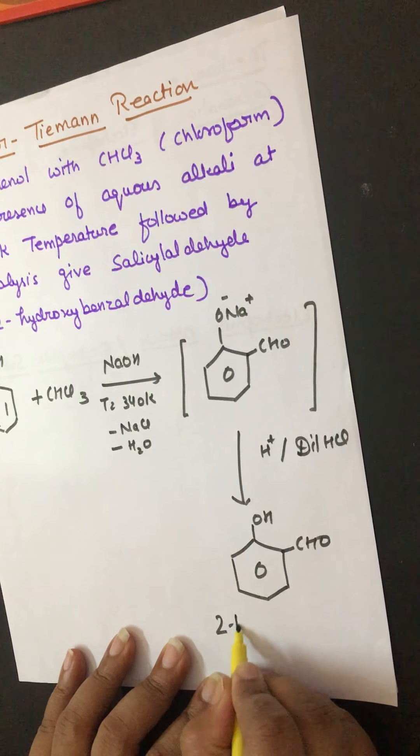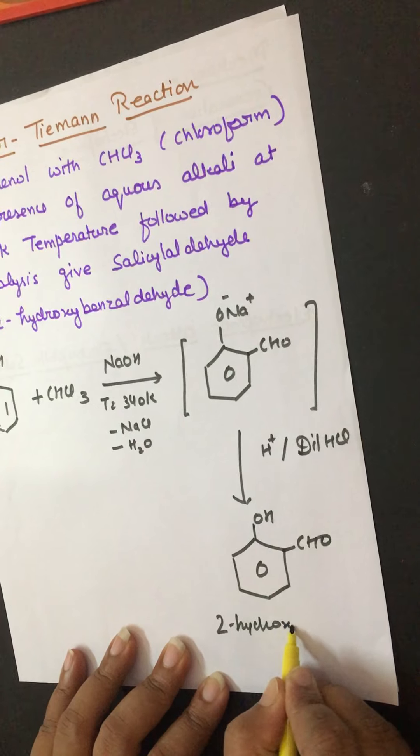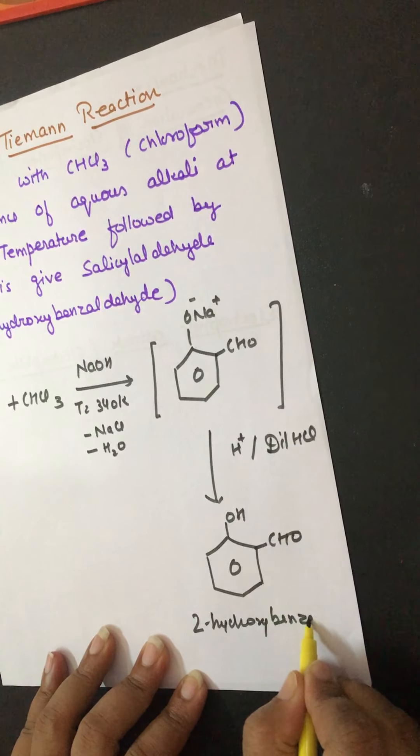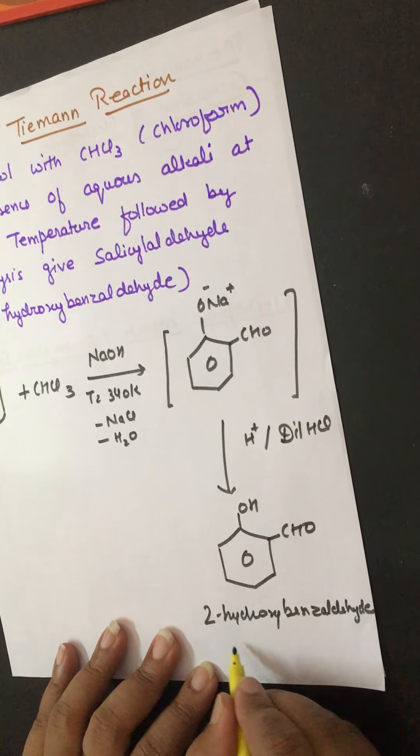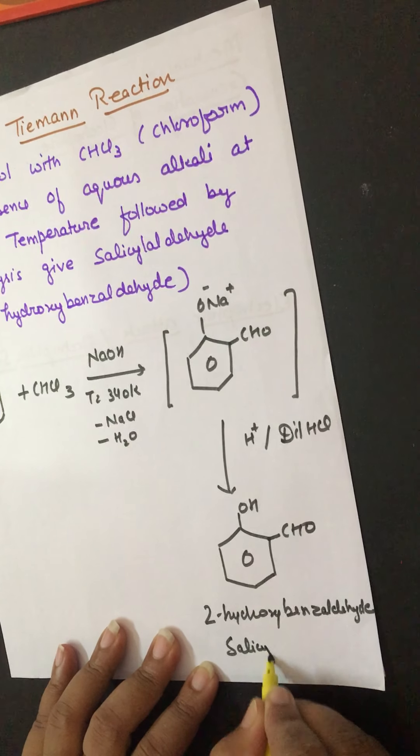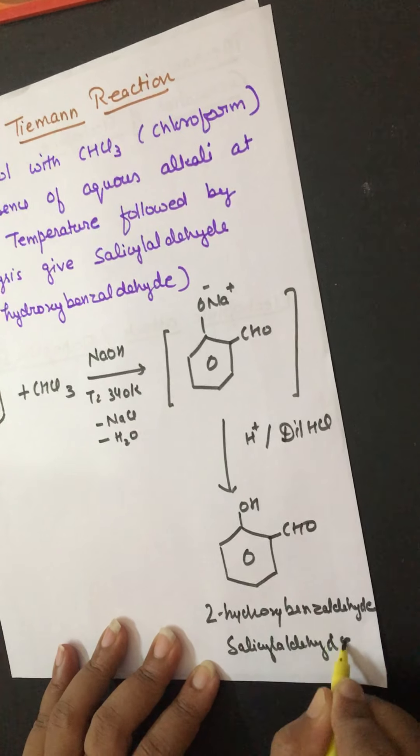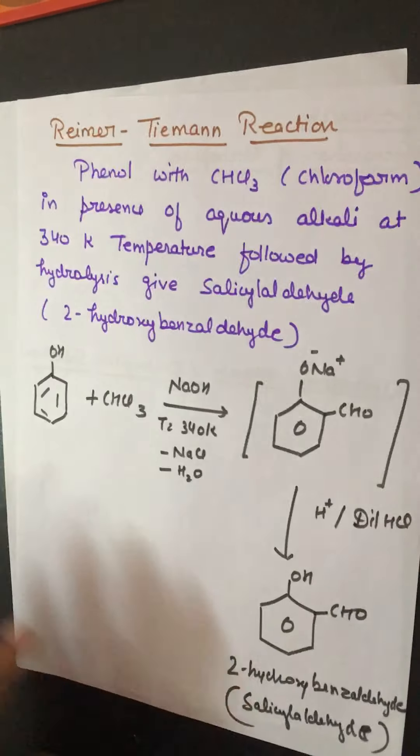This intermediate on acid hydrolysis gives out 2-hydroxybenzaldehyde, which is also known as salicylaldehyde.